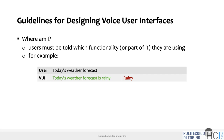Voice-first devices also provide suggestions on screen, which is another way to give users information about what they can do — showing random suggestions or telling users 'to select option one, say this.' The second guideline is 'where am I?' Since there are no visual affordances or navigation, users must be told which functionality they are currently using.